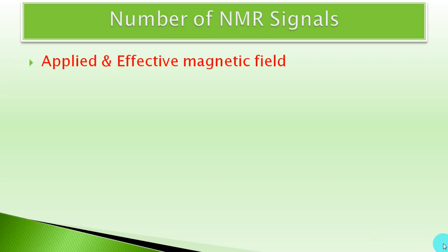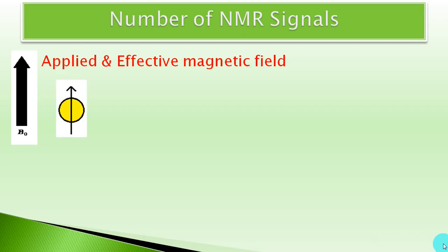We will learn this through small sub-topics. The first sub-topic is: what is meant by applied and effective magnetic field? In the previous lecture, we learned that if an NMR active nucleus is placed in an external field and electromagnetic radiations are applied, that nucleus absorbs a particular electromagnetic radiation and flips — its nuclear magnetic moment goes from parallel to anti-parallel with respect to the external magnetic field.